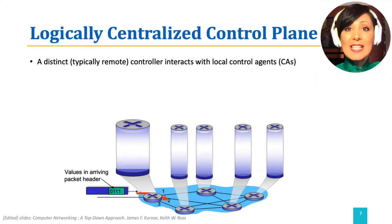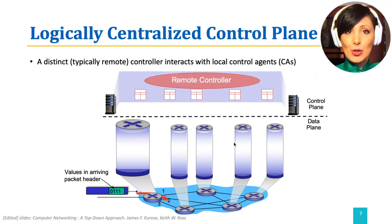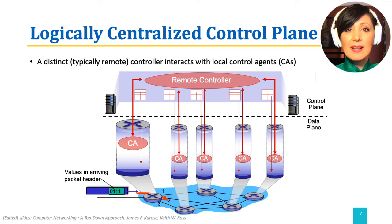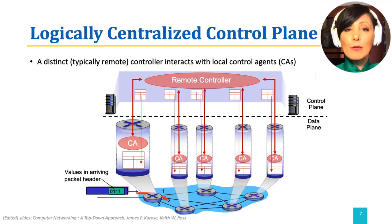In the logically centralized control plane, which is the more recent solution used in software-defined networking, a distinct central network controller, which is often a remote server, interacts with local control agents to decide the routes and write the per-router forwarding tables at the data plane accordingly. So the decisions are made centrally and propagated through writing individual forwarding tables.